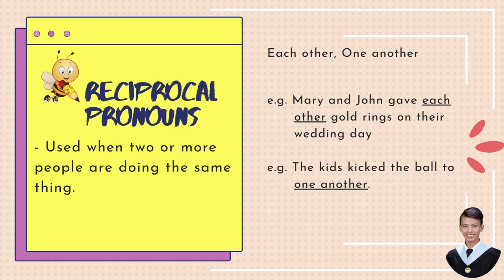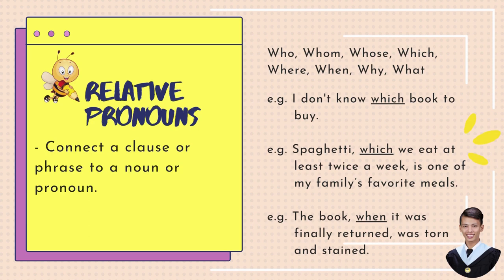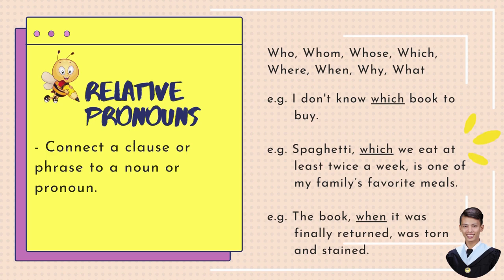Next, relative pronouns — it connects a clause or phrase to a noun or pronoun. These are: who, whom, whose, which, where, when, why, and what. Example number one: I don't know which book to buy. 'I don't know' and 'book to buy' are two phrases connected by the relative pronoun 'which.' Example number two: Spaghetti, which we eat at least twice a week, is one of my family's favorite meals. Third example: The book, which was finally returned, was torn and stained. The underlined words 'which' and 'when' are relative pronouns.